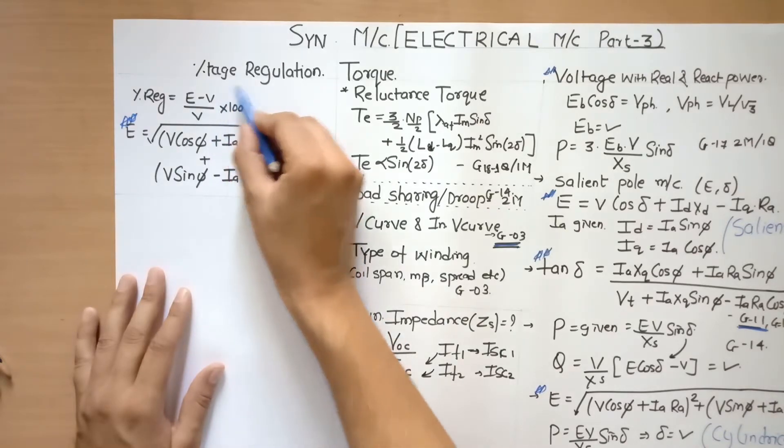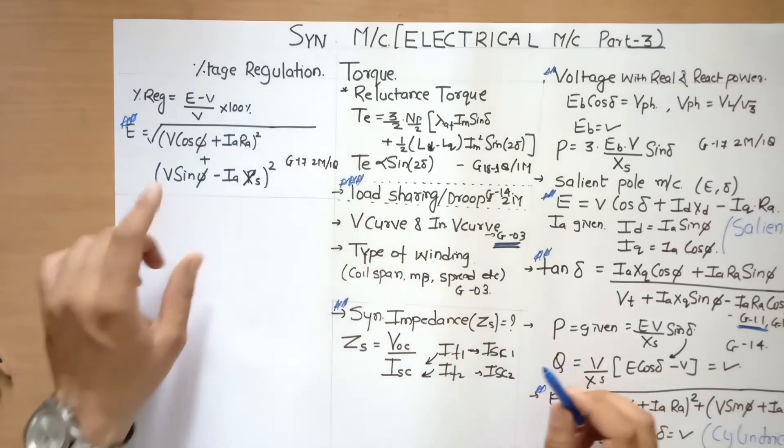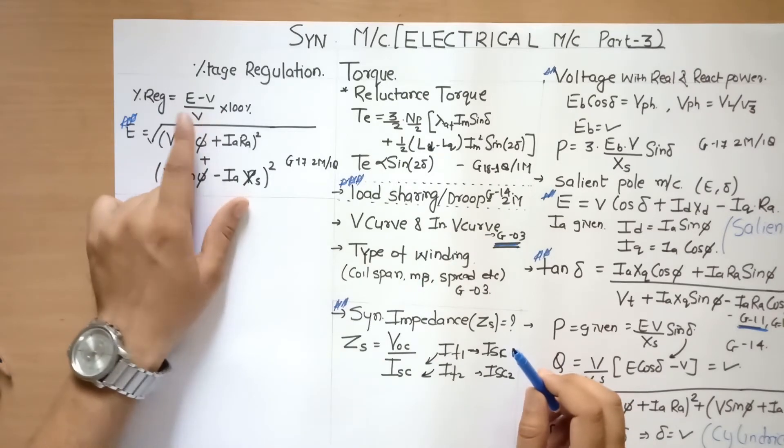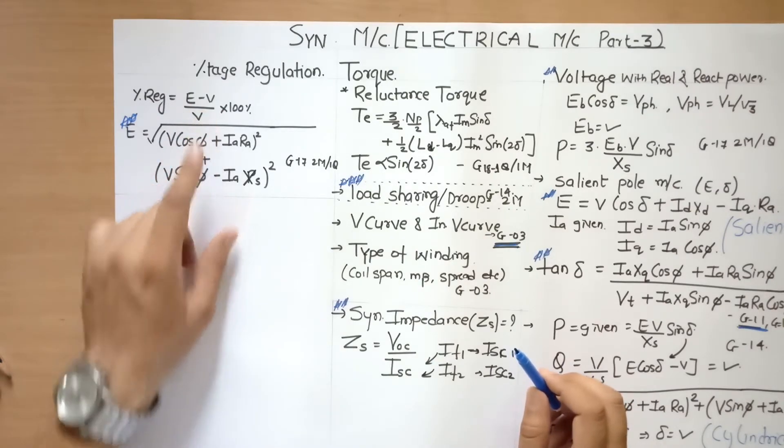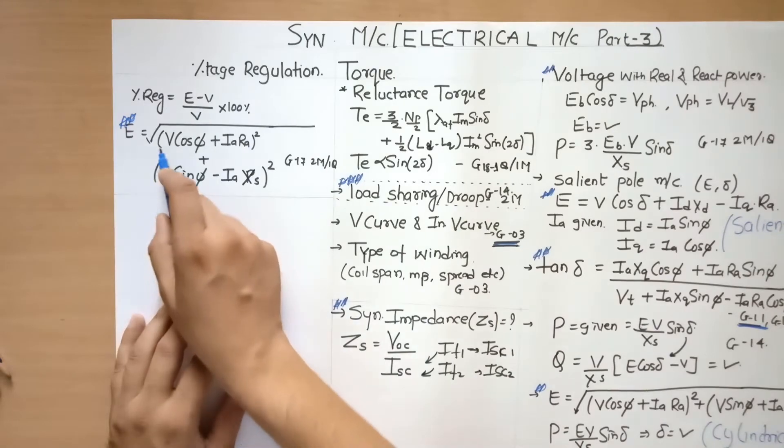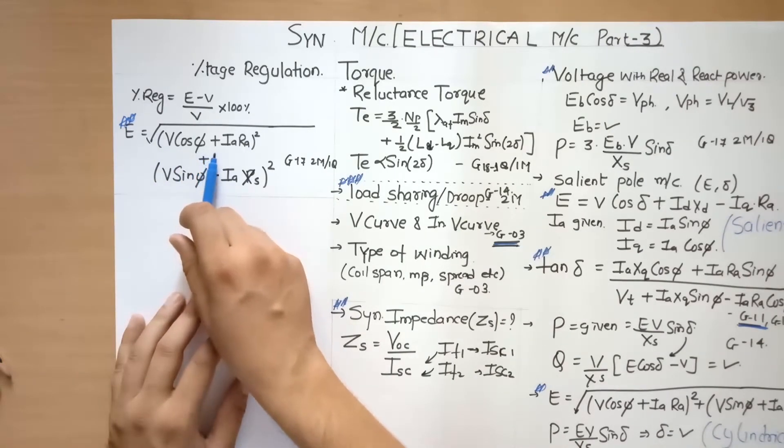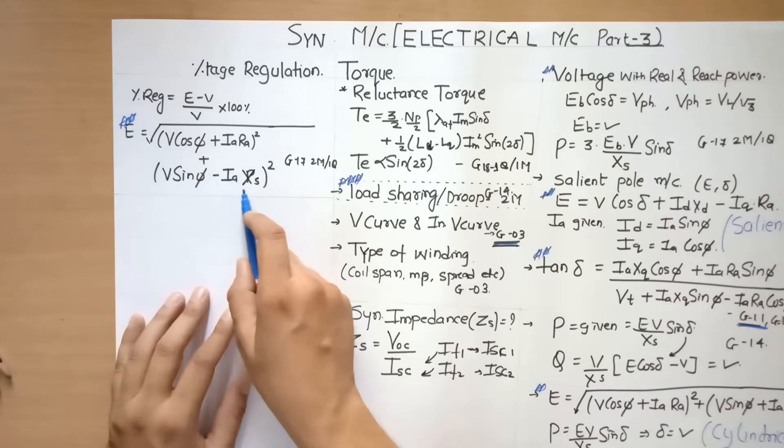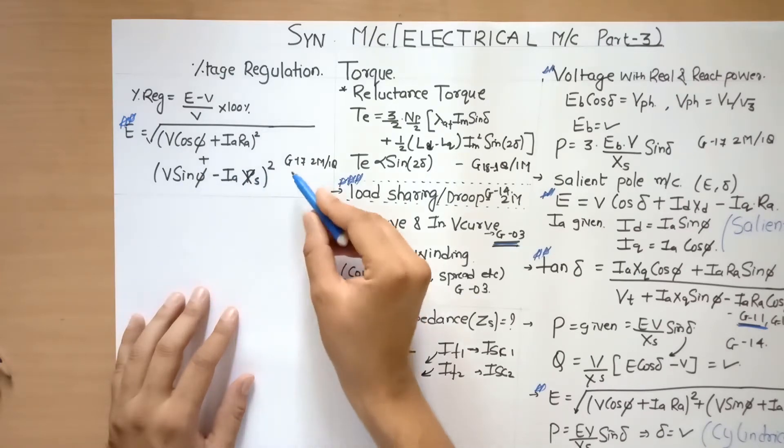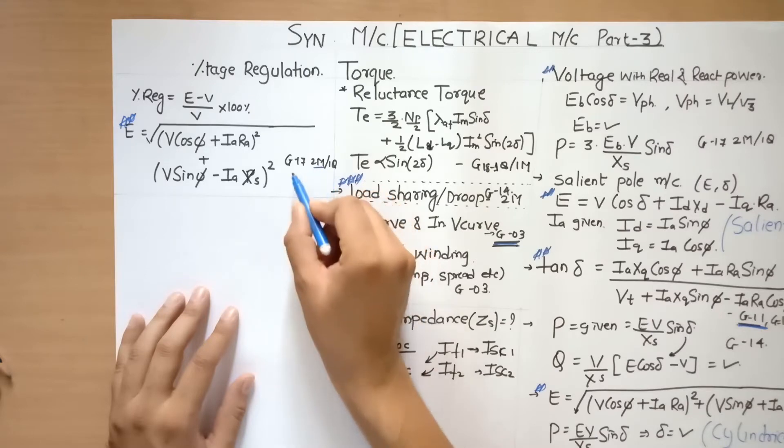In percentage regulation, the equation is E minus V divided by V into 100%. Here E is equal to square root of (V cos phi plus Ia Ra)² plus (V sin phi minus Ia Xs)². This was asked for 2 marks in gate 2017.